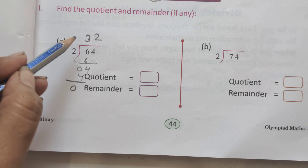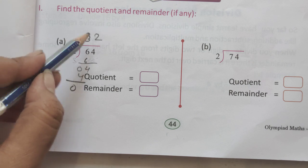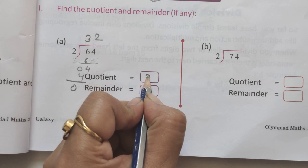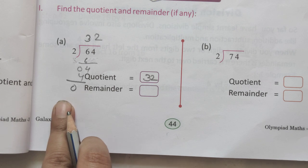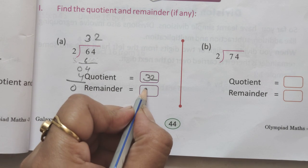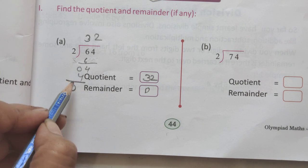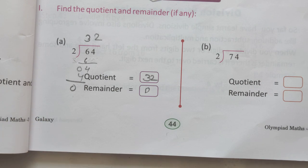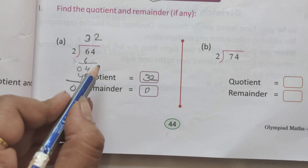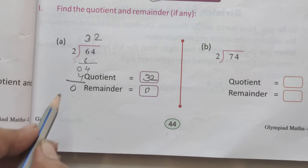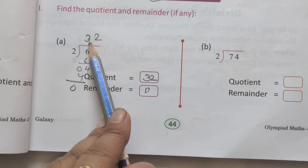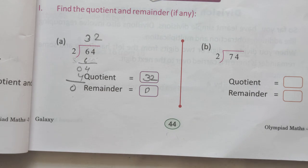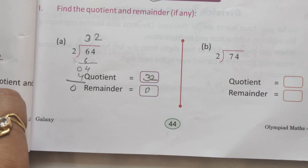The quotient is 32 and the remainder is 0 because 4 subtract 4 is 0. We can express this division as 64 divided by 2 equals 32. Is that clear to all of you? Any problem? Write in your book, neat and clean work.